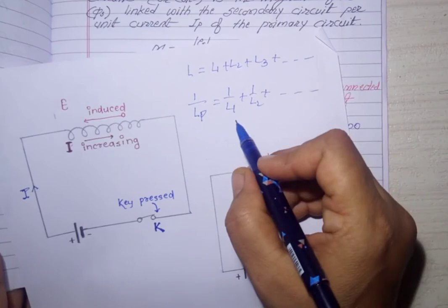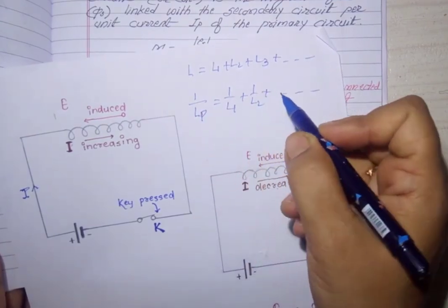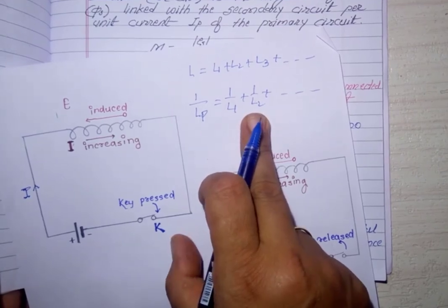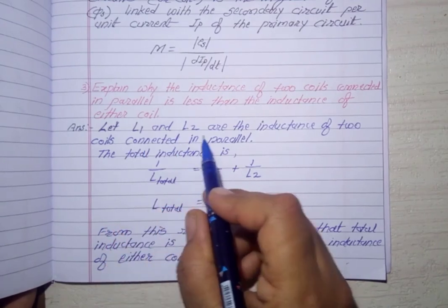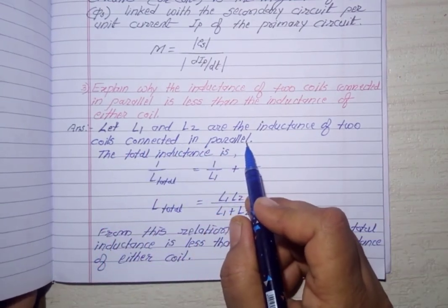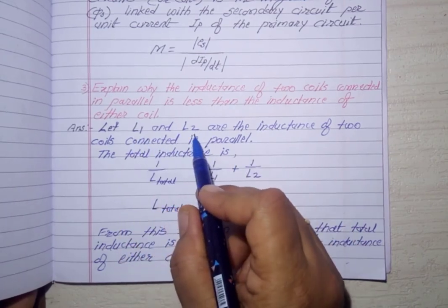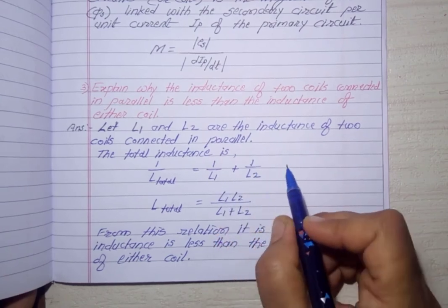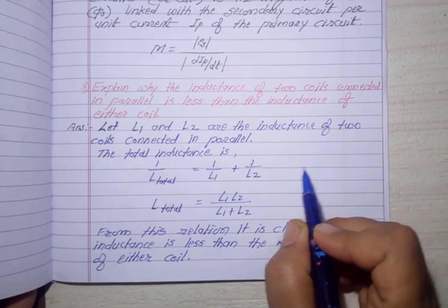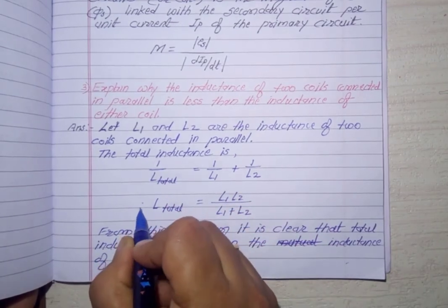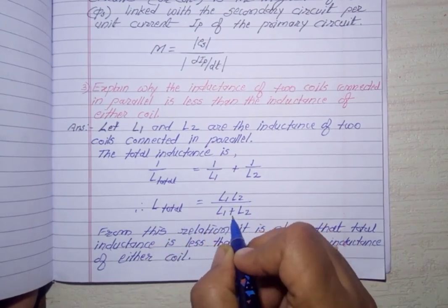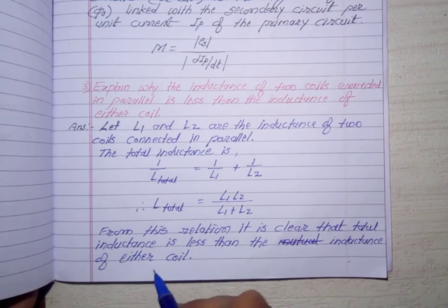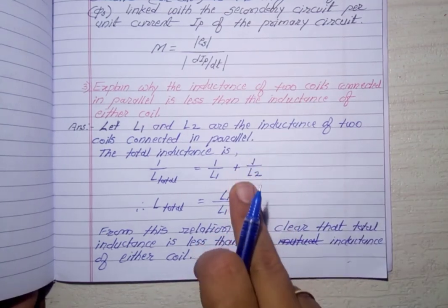For parallel inductance: 1 upon L_P equals 1 upon L1 plus 1 upon L2 and so on. So when two inductances L1 and L2 are connected in parallel, the equivalent inductance is: 1 upon L_total equals 1 upon L1 plus 1 upon L2. Therefore L_total equals L1 times L2 upon (L1 plus L2). From this relation it is clear that the total inductance is less than the inductance of either coil. Thus, you can explain this question using these two formulas.